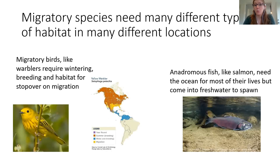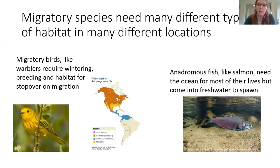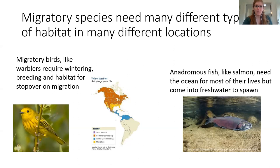Same with migratory birds like the yellow warbler — a dam wouldn't stop them, but they spend their summers breeding in North America and go down to South America and Central America for wintering. Not only do they need breeding habitat, they need pristine wintering habitat, and along the way they need stopover habitat — little patches where they can stop, eat, rest, and refuel to continue their journey. This little guy, the yellow warbler, is like a 10 or 11 gram bird, and it's really important that they have those places to stop and rest on their big migration north.